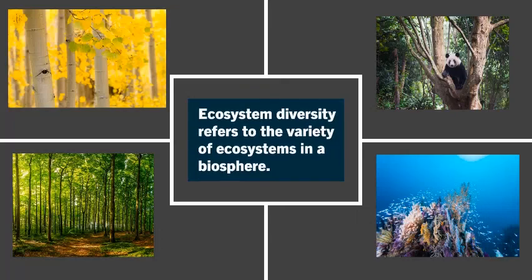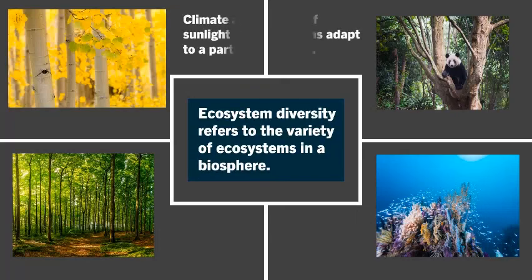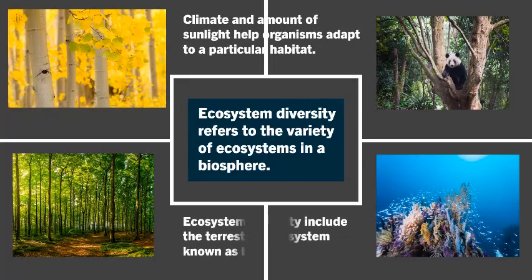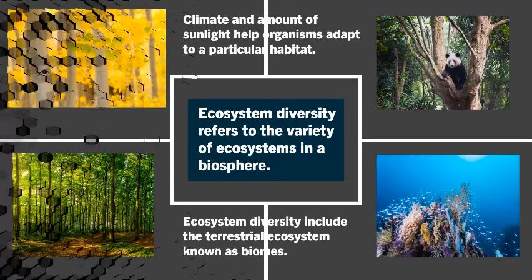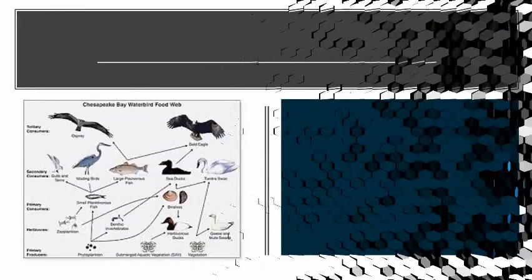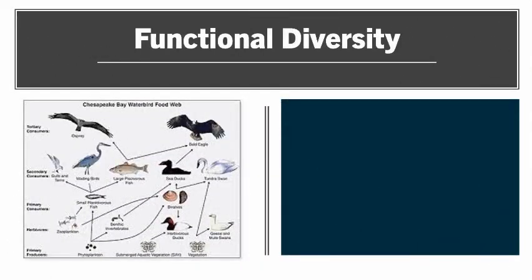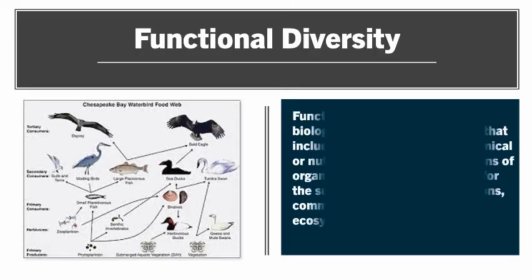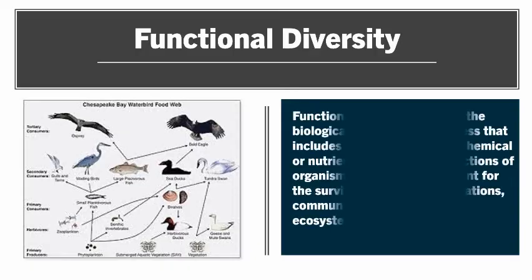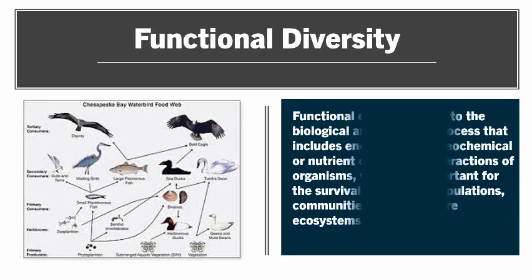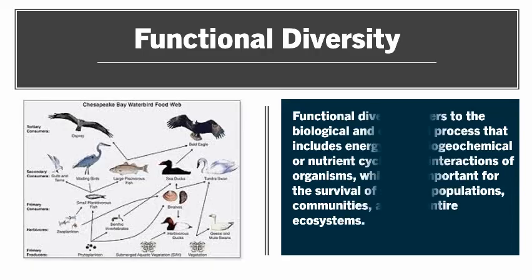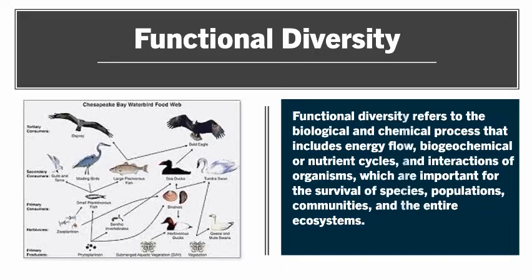Ecosystem diversity refers to the variety of ecosystems in a biosphere. Functional diversity refers to the biological and chemical processes that include energy flow, biogeochemical or nutrient cycles, and interactions of organisms, which are important for the survival of species, populations, communities, and entire ecosystems.